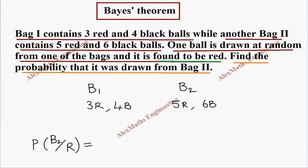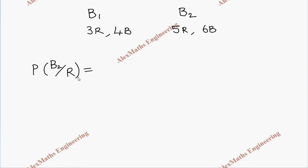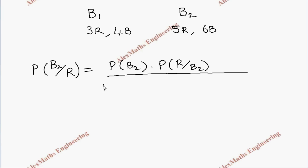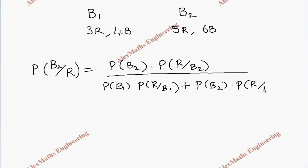Now we write the formula for this expression. As per Bayes' formula, the numerator is P(B2) times P(R | B2), divided by the total probability: P(B1) times P(R | B1) plus P(B2) times P(R | B2). Once we understand how to write this formula, everything else is direct substitution.